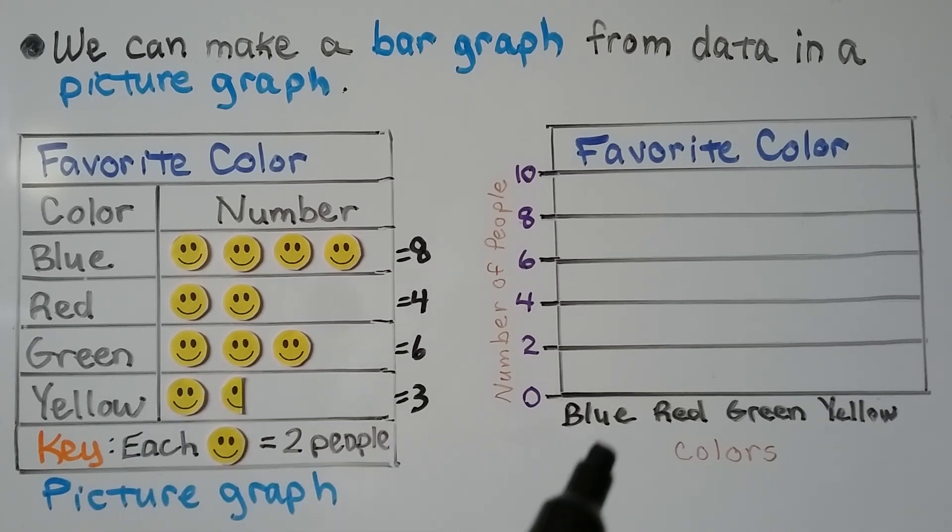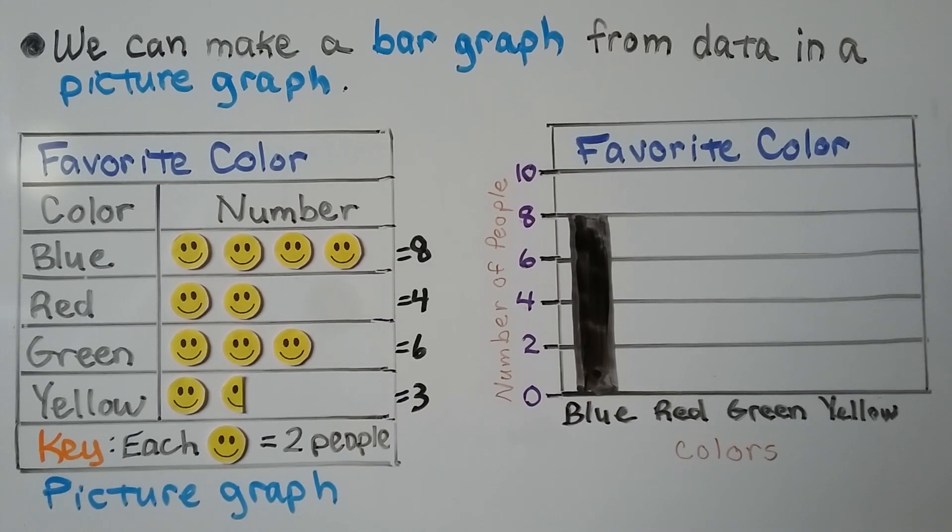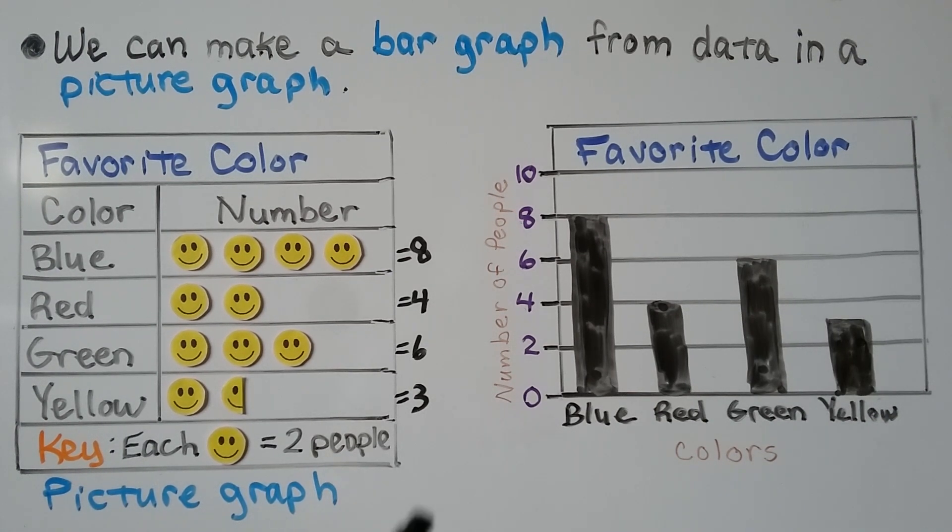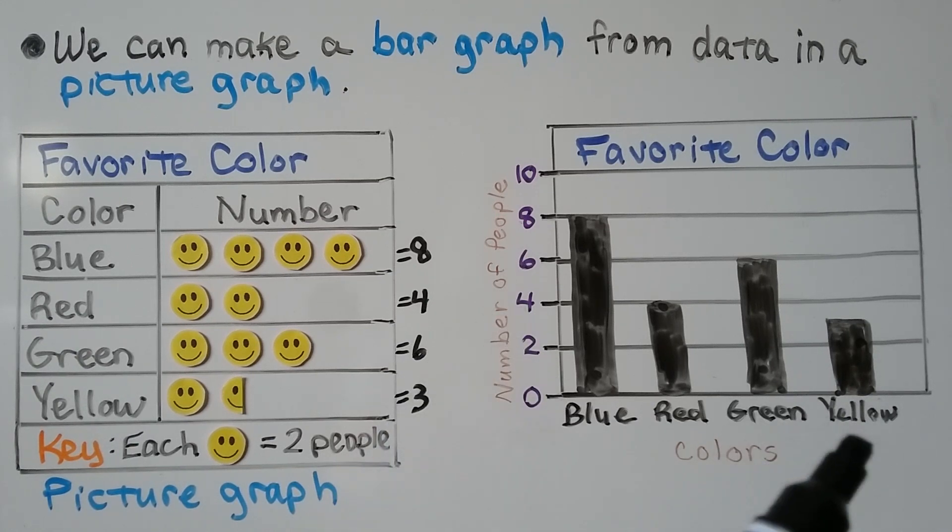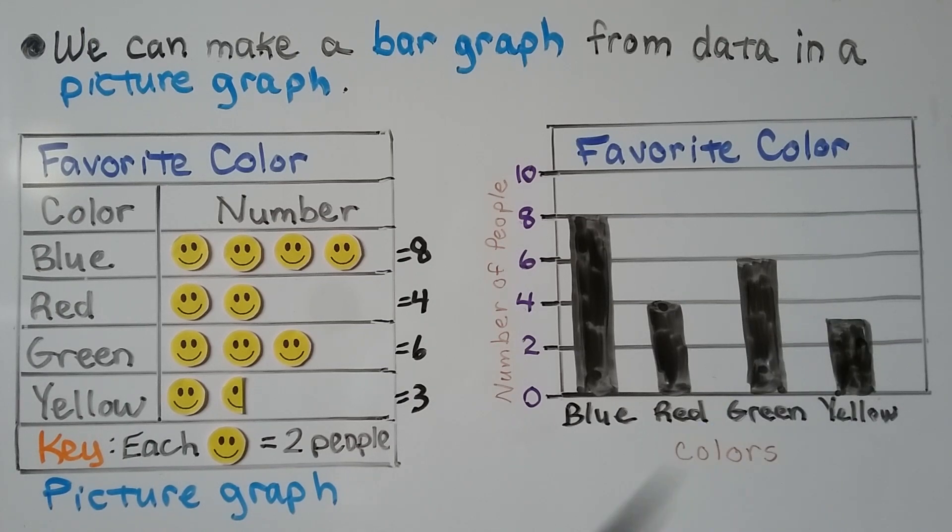Now we can draw our bars and shade them in for our bar graph. We have 8 for blue, 4 for red, 6 for green. And because there's no 3 on our scale, 3 is in between 2 and 4, our bar for yellow is going to be in between 2 and 4.